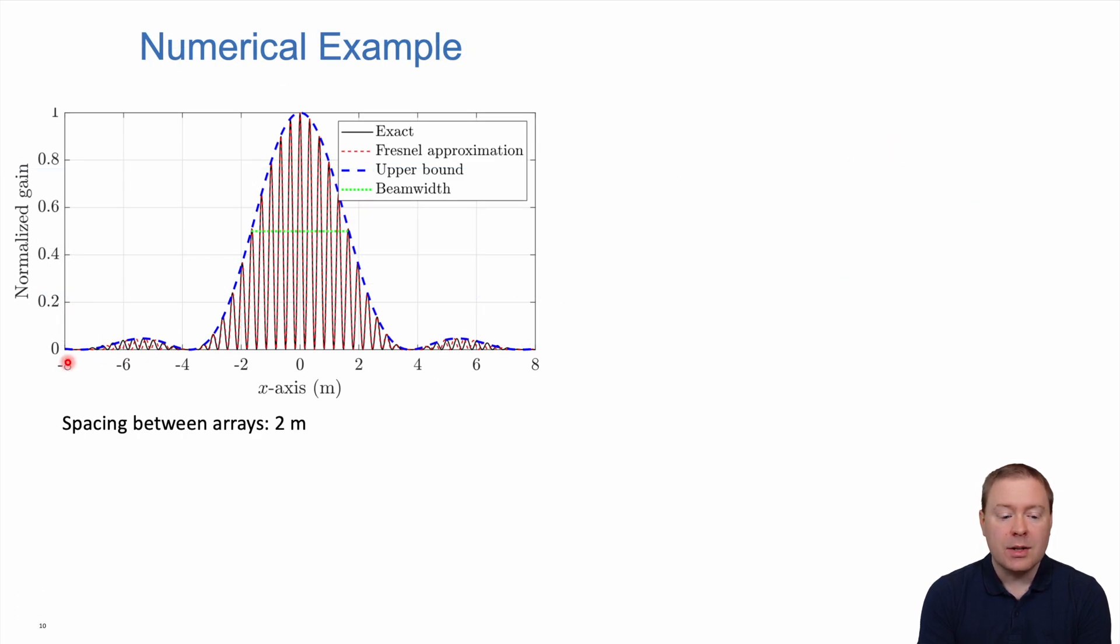Here's an illustration of beamforming gain when moving the sample user. We have maximum gain where we're focusing the signal. The envelope or upper bound factor is the blue line, and the ripple factor cosine gives additional ripples up and down. With two arrays two meters apart, we get quite rapid ripples. Defining the 3dB beam width as the interval with normalized beamforming gain between 0.5 and 1, we have multiple ripples inside.